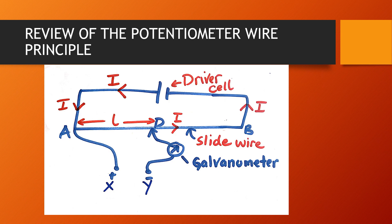The PD increases from point A up to point D, so the PD from A to D is directly proportional to the balance length. When a circuit is connected to the lower part of the potentiometer wire, at some point the galvanometer shows no deflection — it means that there is no current flowing through the galvanometer, and therefore the PD between X and Y is equal to the PD on the potentiometer wire. That is the principle that will help us in the calculations.